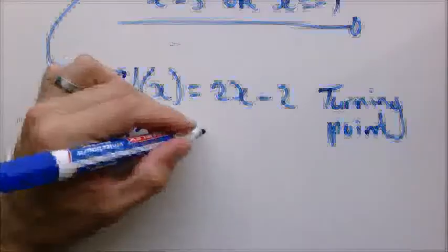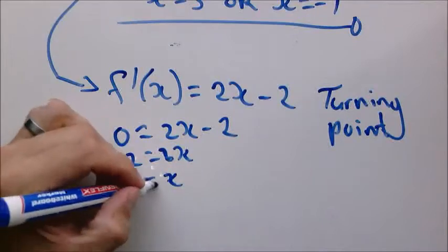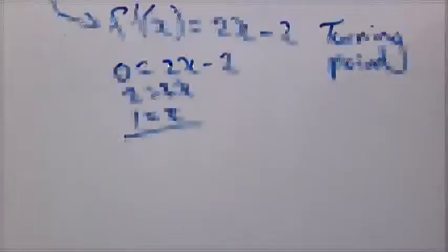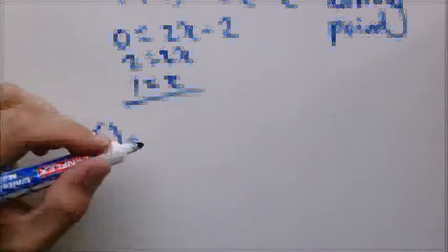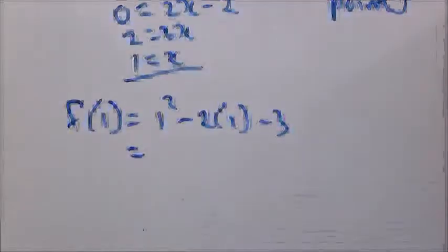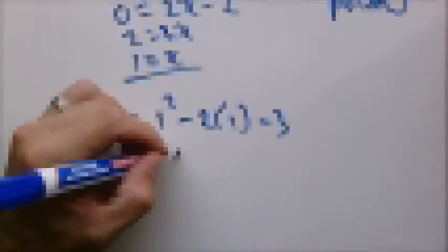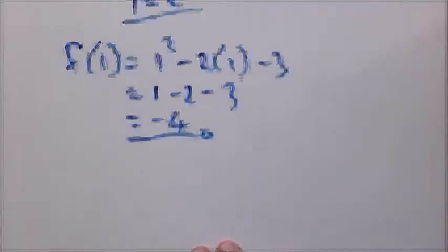So 0 equals 2X minus 2. So 2 equals 2X. X equals 1. Now we substitute 1 back into the original equation. To get the Y value at the point which is 1 minus 2 minus 3 is equal to minus 4. Now we are sorted.